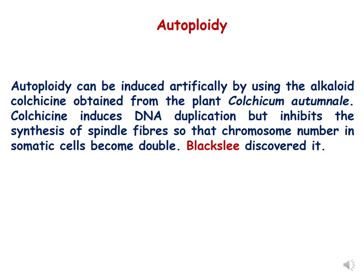Autopolyploidy can be induced artificially using the alkaloid colchicine, which is obtained from the plant Colchicum autumnale. Colchicine induces DNA duplication but inhibits synthesis of spindle fibers, so the chromosomes duplicate but are not able to separate from each other and so they are doubled in the cell. This was discovered by Blakeslee, and colchicine induces endo-reduplication of chromosomes.